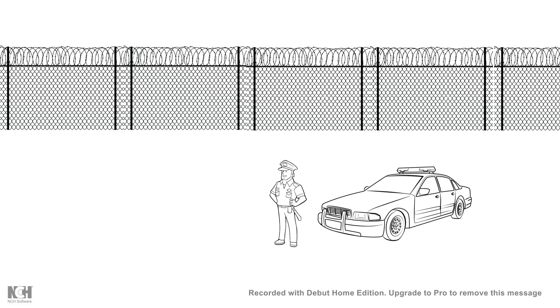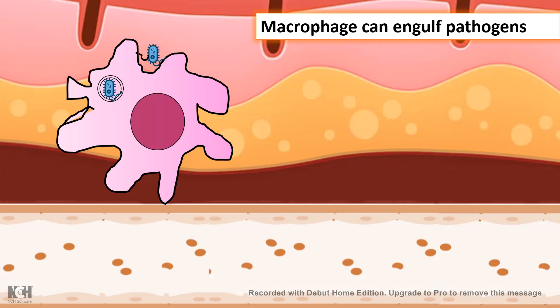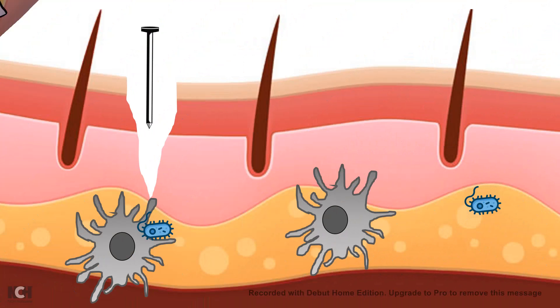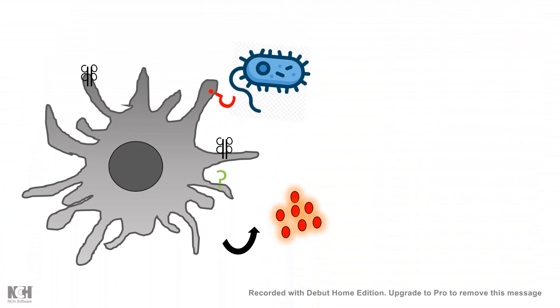In a country there are patrolling police officers that constantly patrol the border area looking for potential invaders. In the body, those patrolling police officers are macrophages and dendritic cells, which roam just beneath the skin looking for potential pathogens to phagocytose. Whenever a pathogen enters, these cells first try to recognize what is associated with it.